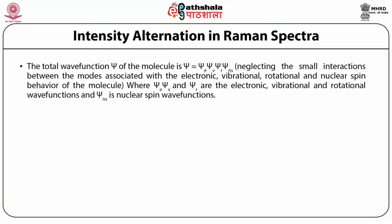For integral nuclear spins (0, 1, 2, etc.), the complete wave function of the molecule must be symmetric with respect to exchange of the two identical nuclei. For half-integral nuclear spin, the wave function must be anti-symmetric in an exchange of the two nuclei — these are identical fermions. The total wave function ψ = ψ_e · ψ_ν · ψ_r · ψ_ns, neglecting small interactions between the electronic, vibrational, rotational, and nuclear spin modes. Here ψ_e, ψ_ν, and ψ_r are the electronic, vibrational, and rotational wave functions, while ψ_ns is the nuclear spin wave function.